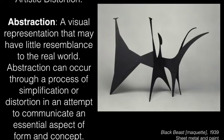Another type of artistic distortion is abstraction — a visual representation that may have little resemblance to the real world. Abstraction can occur through simplification or distortion in an attempt to communicate an essential aspect of form and concept. This is Black Beast by Alexander Calder. I see a bat, a wolf, a web — all these different things, but no one thing in particular. A very simplified, very distorted form. You can almost flip it upside down and look at it a different way — it's just its own thing.